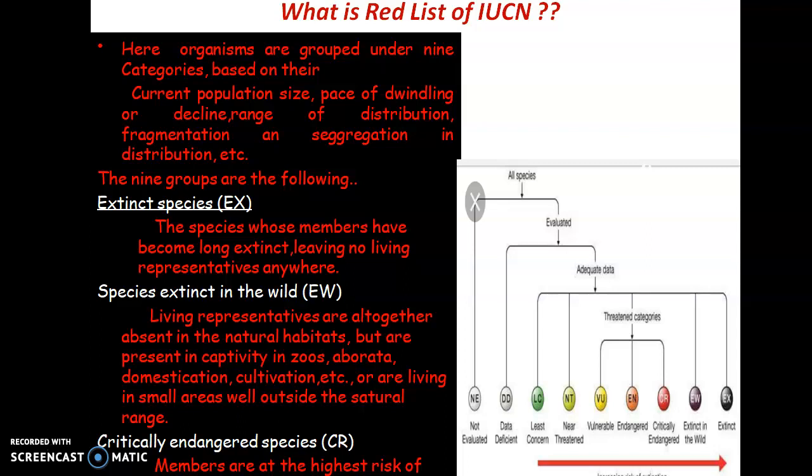Then there are species which are Extinct in the Wild, represented by EW. These are species whose living representatives are altogether absent in their natural habitat but are present in captivity — in zoos, arboreta, domestication, cultivation, etc. — or they are living in small areas well outside their natural region. We can observe these organisms only in captivity centers like zoos, arboreta, or wild domesticated areas. This category is known as Extinct in the Wild.